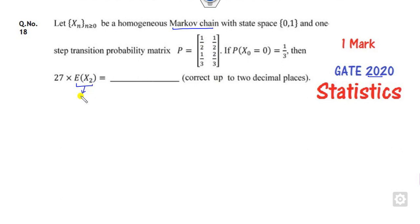What is your target? You have to find the expected value of x2. So what are the states? States are 0, 2, 0, 1.